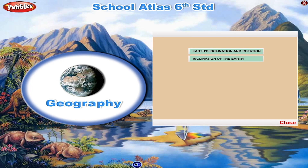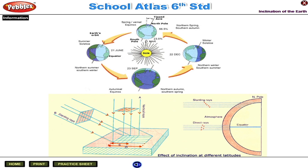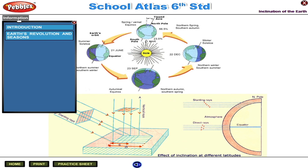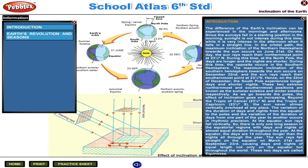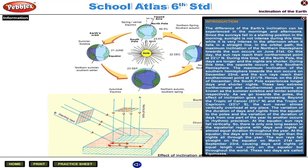Inclination of the Earth. The difference of the Earth's inclination can be experienced in the mornings and afternoons. Since the Sun rays fall in a slanting position in the morning, sunlight is not intense during this time, while it is very intense in the afternoon when it falls in a straight line. In the orbital path, the maximum inclination of the northern hemisphere towards the Sun occurs on June 21st, when the Sun rays reach their northernmost point at 23.5 degrees north.